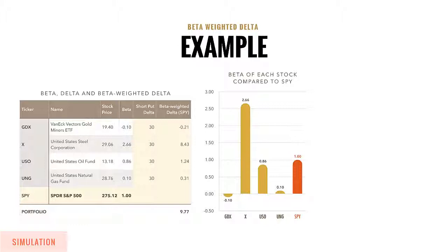USO is nearly relative to the SPY where its beta is 0.86. UNG is less than the SPY with a beta of 0.10.